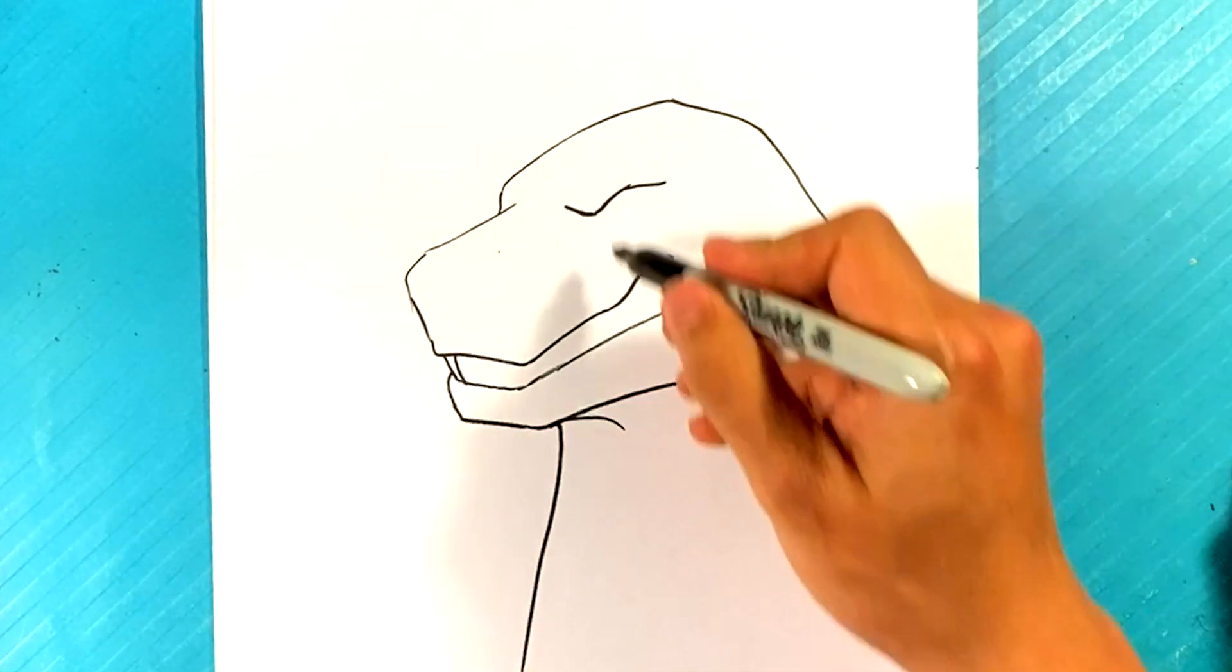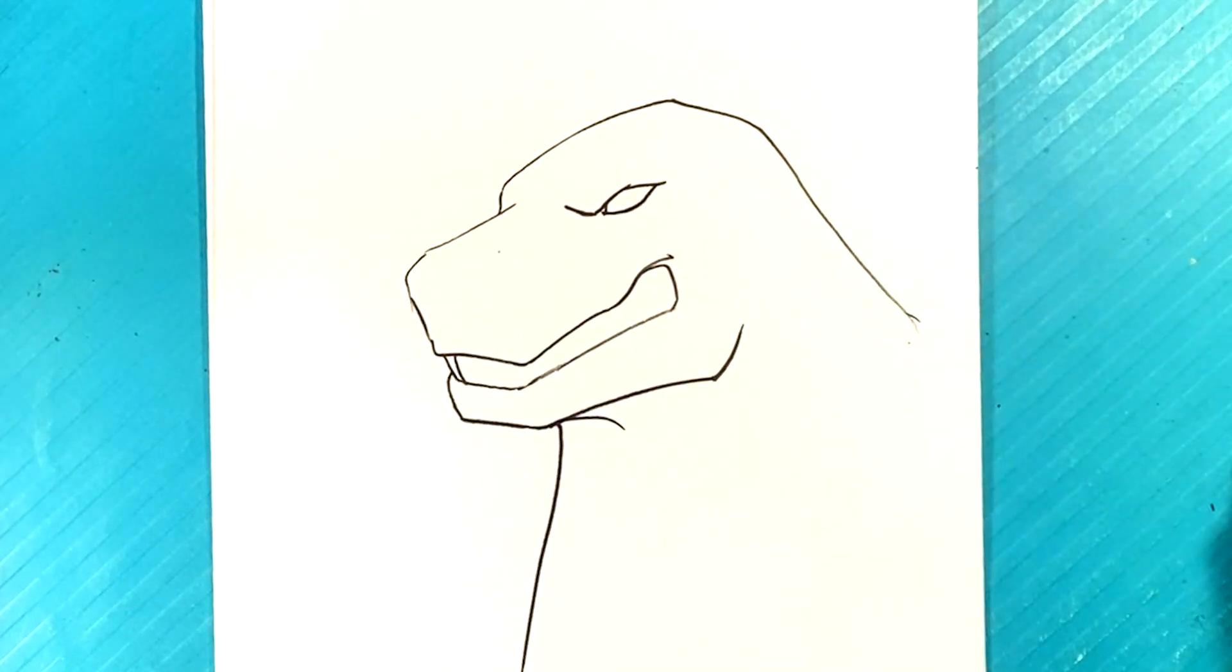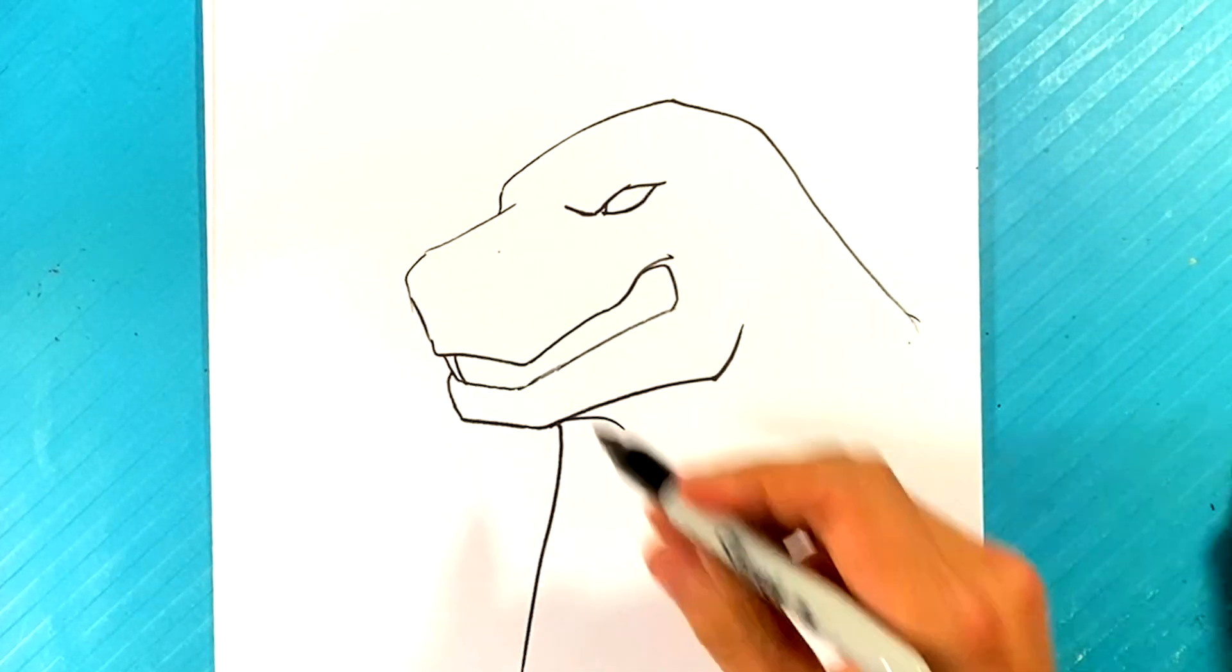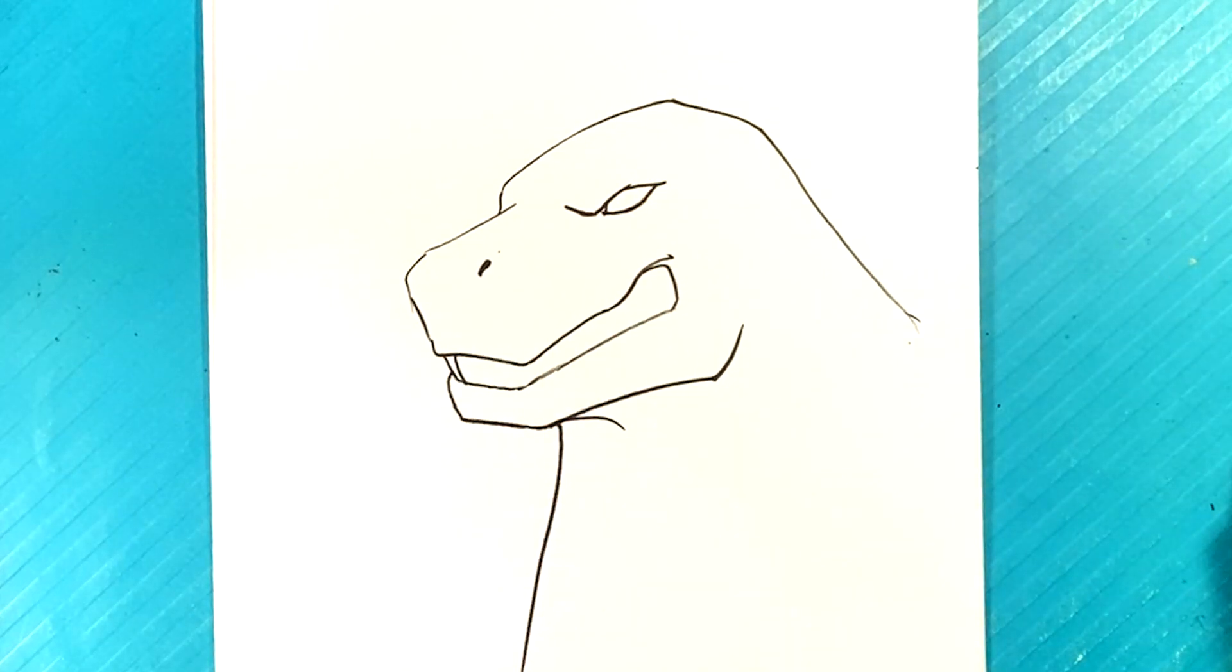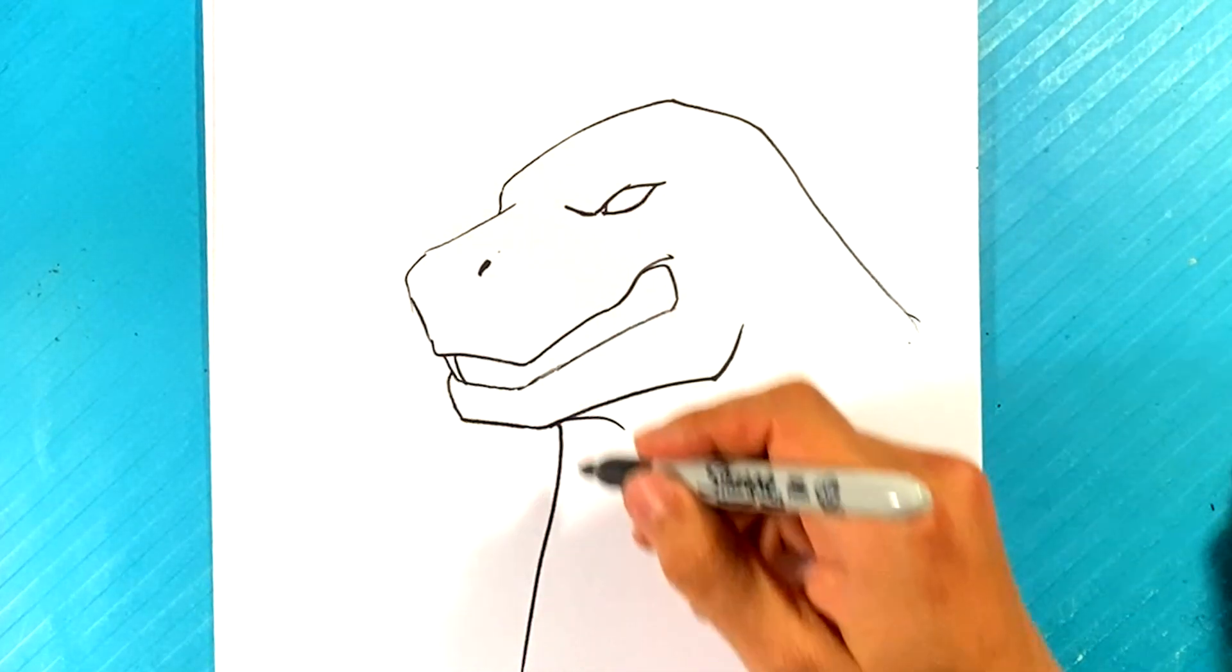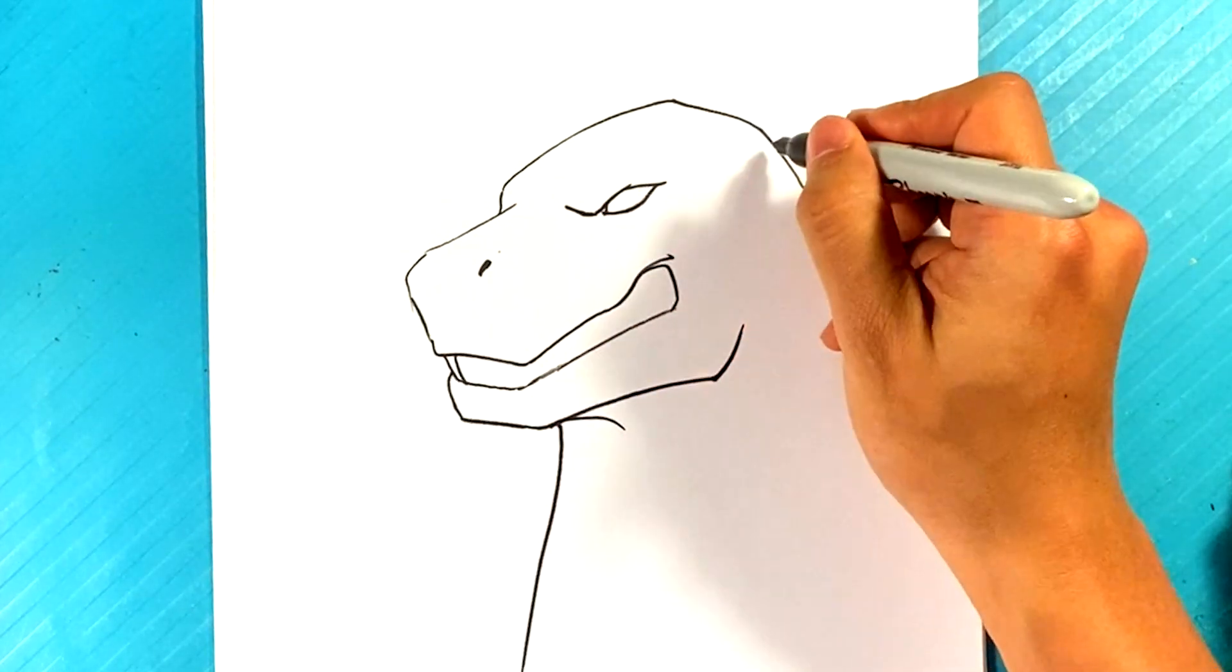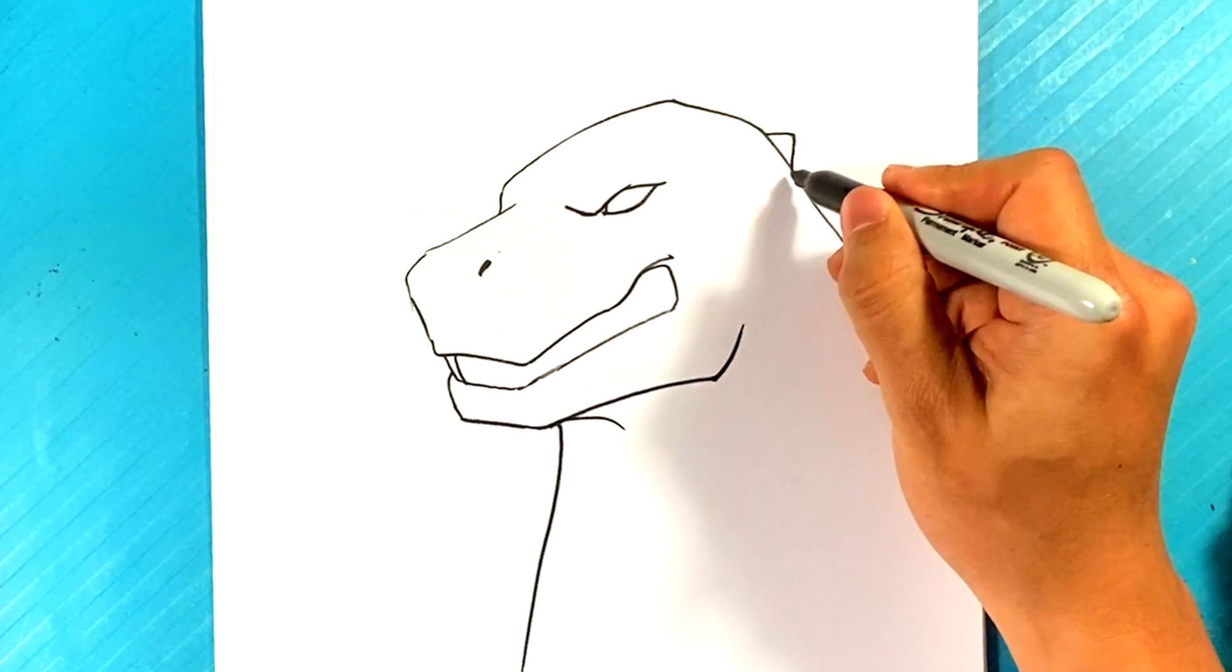Up line right there for the eye, curve right here. Let's go over here for the nasal cavity right there, the nose and nostril. We'll draw a little spike right there in the back.